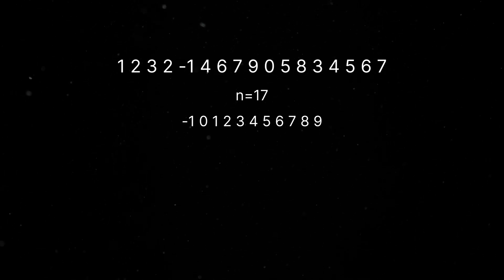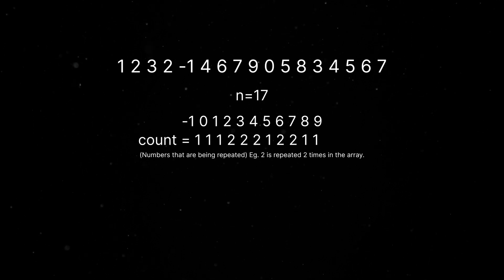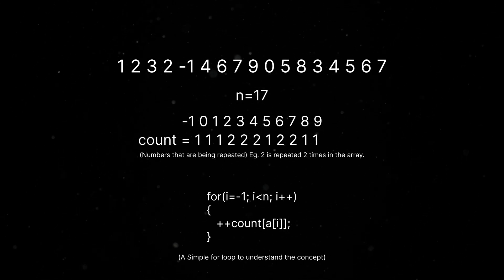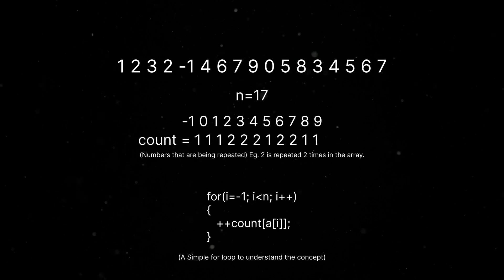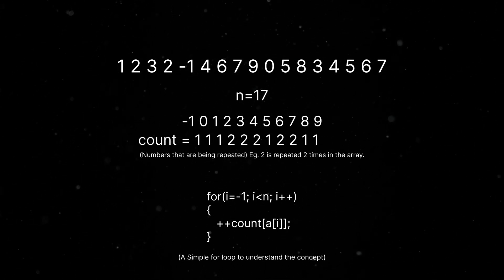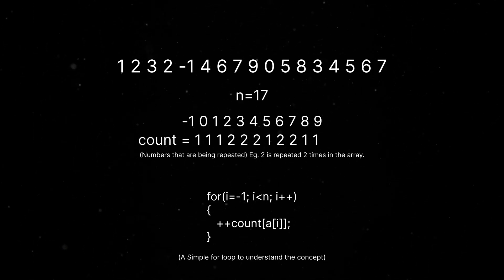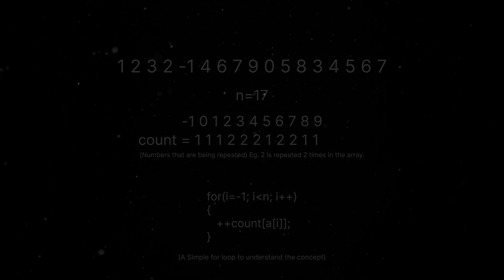We've got negative numbers too, just to spice things up. Now we're going to count how many times each number is repeated — keeping tabs on how many times each number shows up in our list. We scan through an array and every time we see a number, we increment its count value. Once we've counted everything, we know how many times each number is repeated. Then the fun part is sorting: we loop through our count list and organize the numbers based on their popularity.